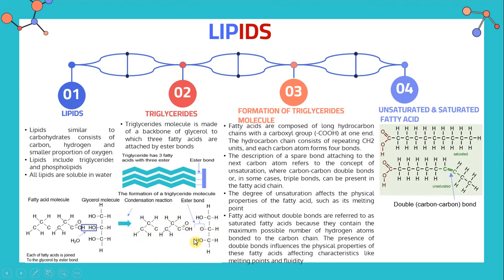This is the process of a condensation reaction in the formation of a triglyceride molecule. Fatty acids are composed of long hydrocarbon chains with a carboxylic group (COOH) at one end. The hydrocarbon chain consists of repeating CH2 units and each carbon atom forms four bonds. A spare bond attaching to the next carbon atom relates to the concept of unsaturation, where carbon-carbon double bonds, or in some cases triple bonds, can be present in the fatty acid chain.